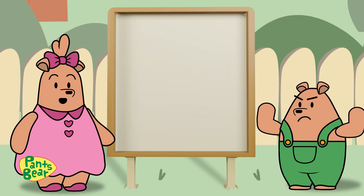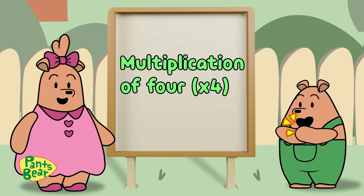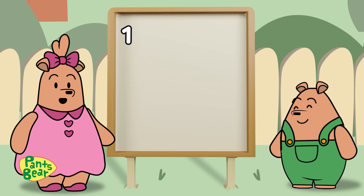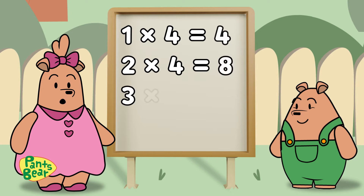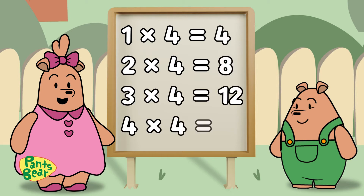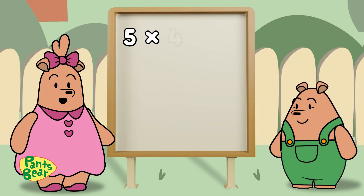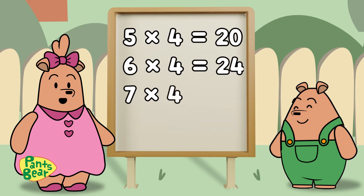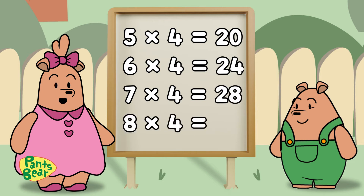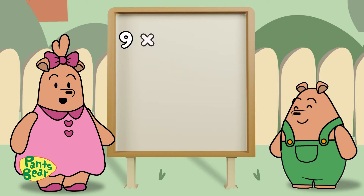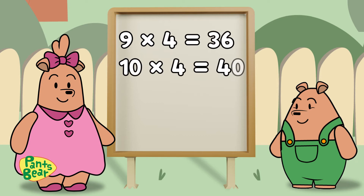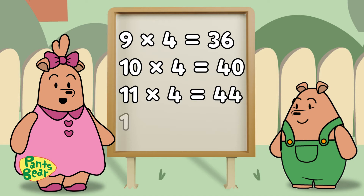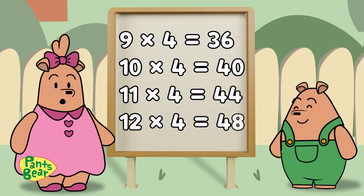That was tough! Okay, Pansper, it's time for multiplication of 4. Are you ready? 1×4=4, 2×4=8, 3×4=12, 4×4=16, 5×4=20, 6×4=24, 7×4=28, 8×4=32, 9×4=36, 10×4=40, 11×4=44, 12×4=48.